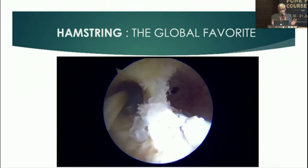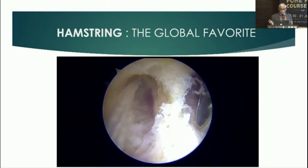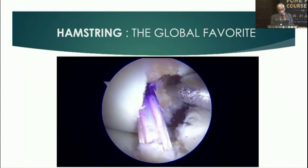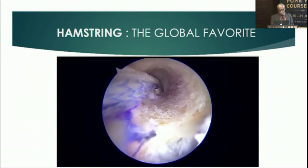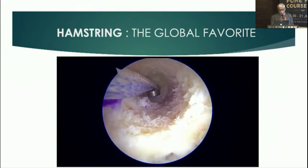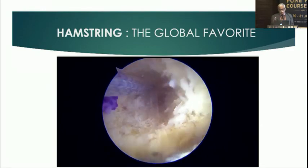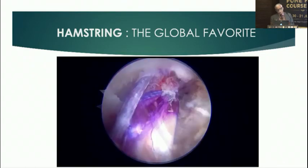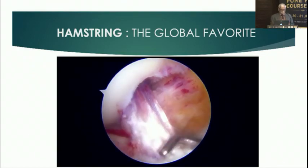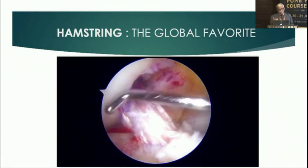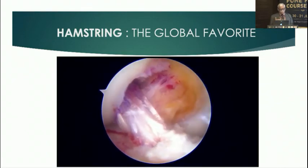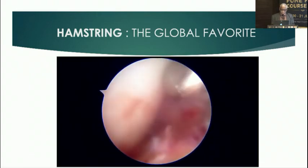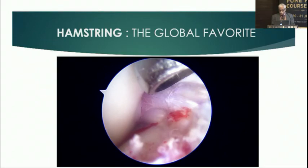Hamstring is our go-to graft. We usually make double bundles to recreate the anatomy, which is quite anatomical on both femoral and tibial sides. We use triple-folded semitendinosus for the anteromedial bundle and triple- or double-folded gracilis for the posterolateral bundle. The two bundles are nicely visualized with no impingement, confirming correct graft positioning.